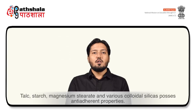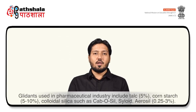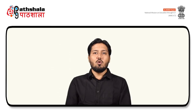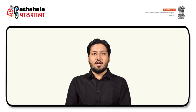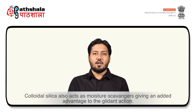Talc, starch, magnesium stearate, and various colloidal silica possess anti-adherant properties. Glidants used in the pharmaceutical industry include talc 5%, corn starch 5-10%, and colloidal silica such as Cabosil, Siloide, and Aerosil at 0.25-3%. Glidants promote flow by lodging into irregularities on the surface of granules, reducing interparticulate friction, and producing a more spherical structure. Colloidal silica also acts as a moisture scavenger, giving an added advantage to the glidant action.